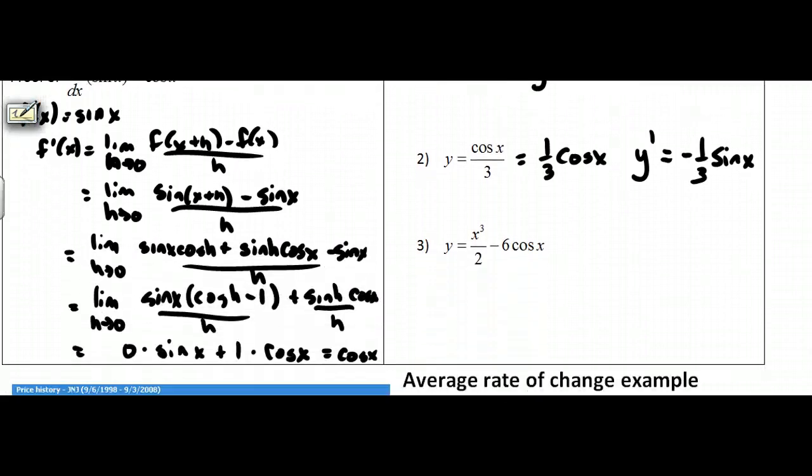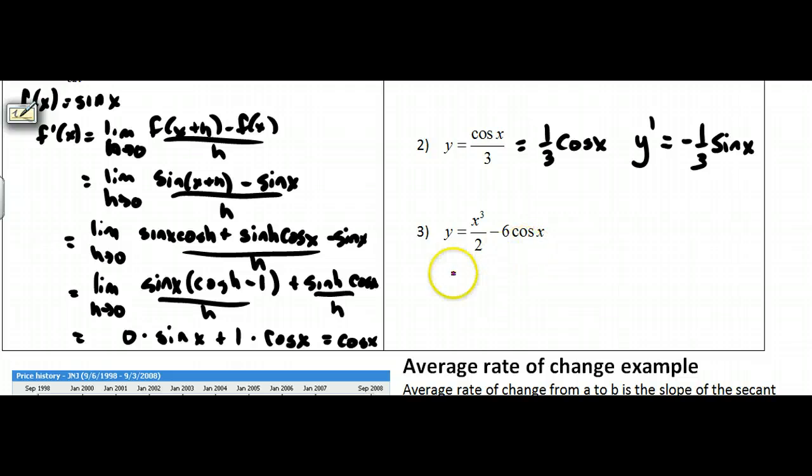If I go to the next one, these are pieces. So I do one piece at a time. Y prime is equal to, this is one-half x cubed. So I'm going to bring the three out in front, raise it to the one less power, and I'm going to take the derivative here. The derivative of the cosine we said was negative sine. So I'm going to end up with positive sine of x. There you go. Those are my derivatives.